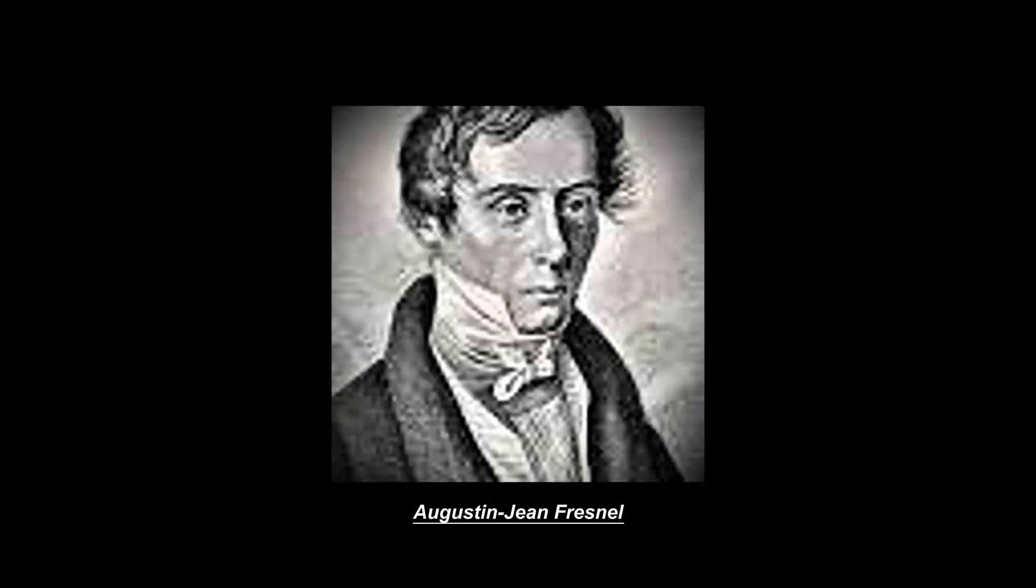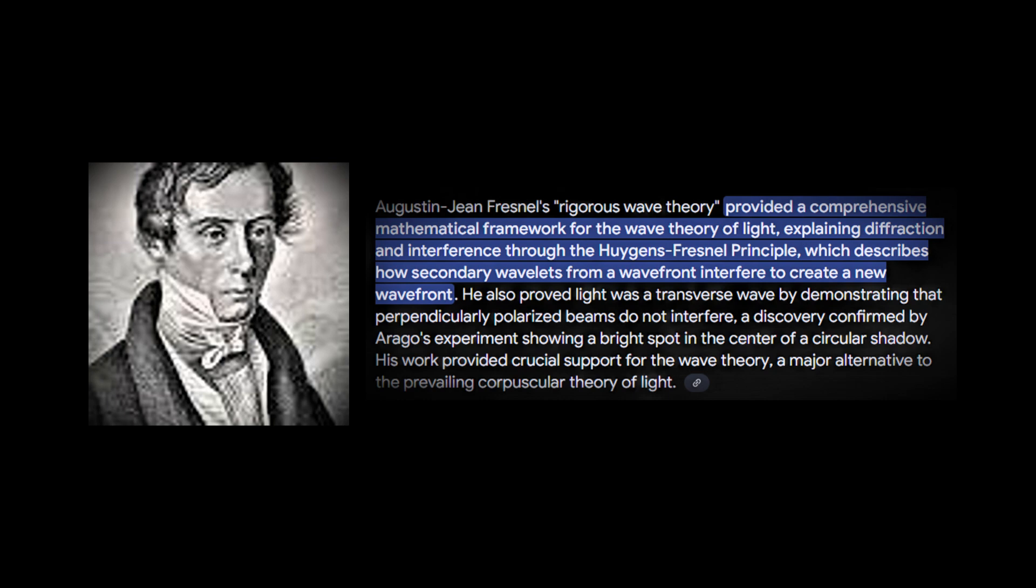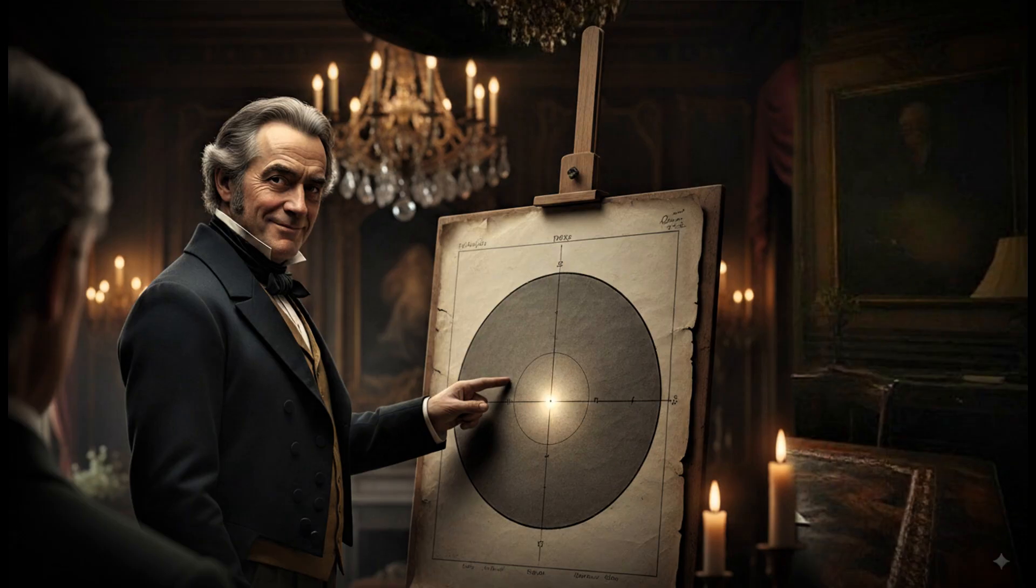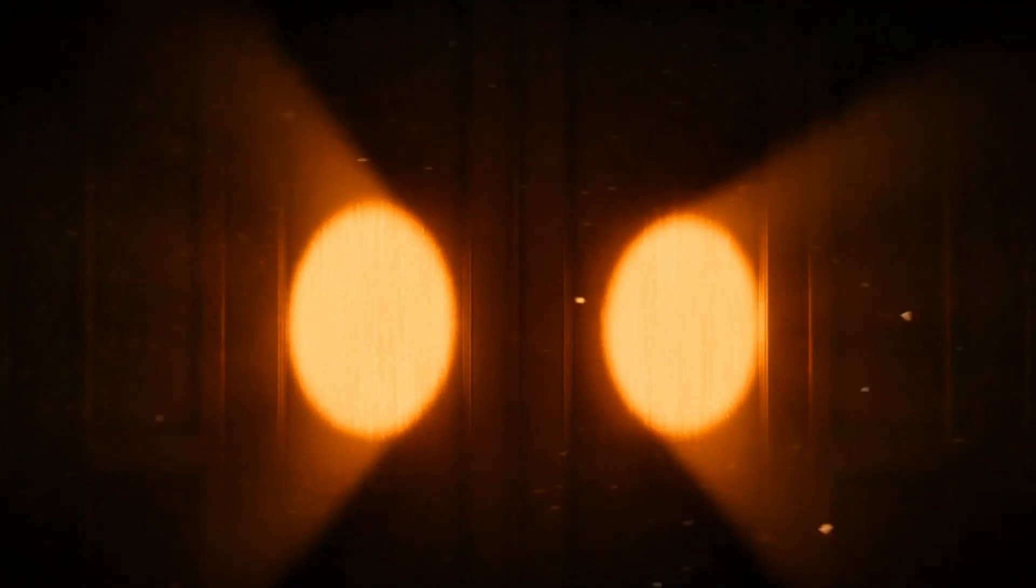The turning point came a few years later, when Augustin-Jean Fresnel gave a rigorous wave theory. One critic, Poisson, mocked it by saying the theory predicted a bright spot in the middle of a shadow, but when tested, the spot actually appeared. This dramatic proof finally gave strong support to the wave theory, and Young's work was vindicated.